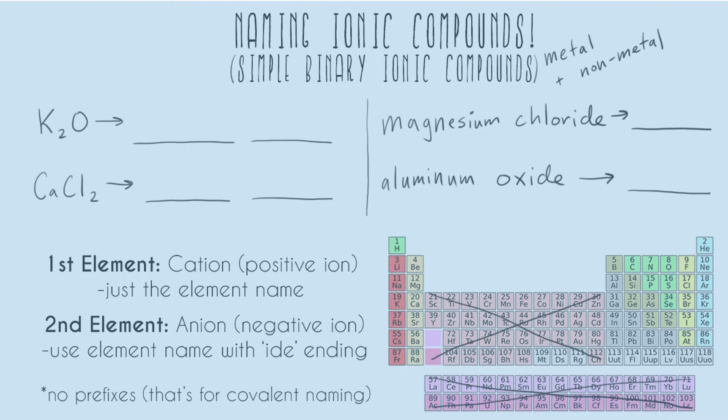Let's start with our first example. We have K2O. We look up K, we figure out that that is potassium. And that's really all we have to do because our first element we just say the element name. We don't have to indicate how many we actually have of this element in the name. And then for our second element we see that O, we look up oxygen, and now we replace the last syllable with the IDE. Oxygen is a little bit of an exception—it actually becomes oxide. And so the name for this is just potassium oxide.